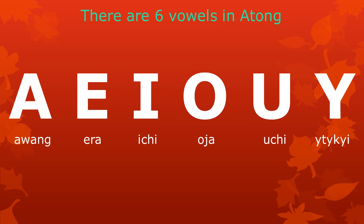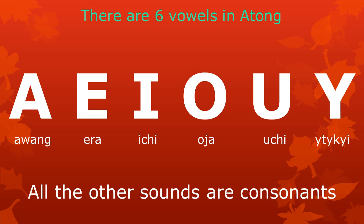Remember that Atong has six vowels, namely A, E, I, O, U, and E. All the other sounds are consonants.